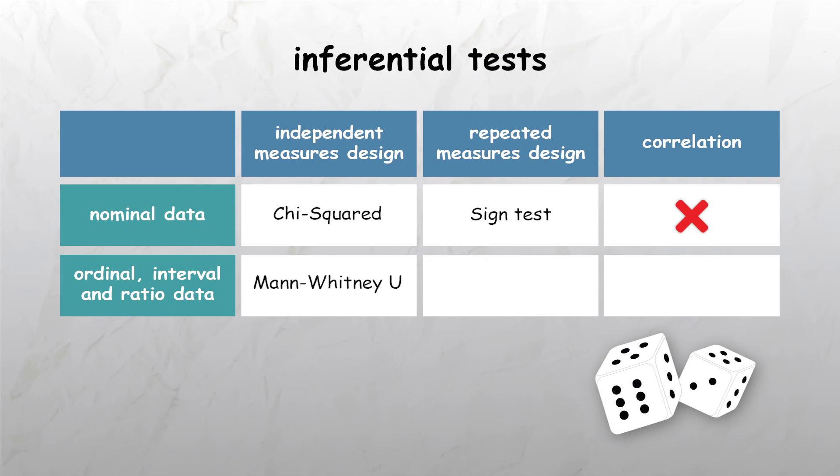The Mann-Whitney-U test is used for ordinal data in a study that has used an independent measures design. The Wilcoxon's signed ranks test is used for ordinal data in a study that has used a repeated measures design. And Spearman's rho is used for ordinal data in a study that has used a correlation design. It's also useful to note that inferential tests that are used for ordinal data can also be used for interval and ratio data.